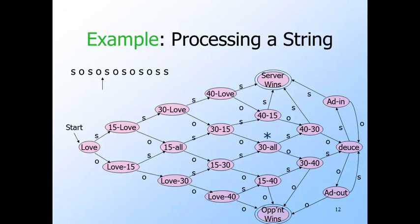Then on s, we go to state 40-30. From there we go on o to deuce. And from deuce on s to add in. From there on o back to deuce. And another cycle on s and o between add in and deuce. Now come the first of the two s's. This s takes us to add in again. But the second s takes us to the server win state. Good going server.